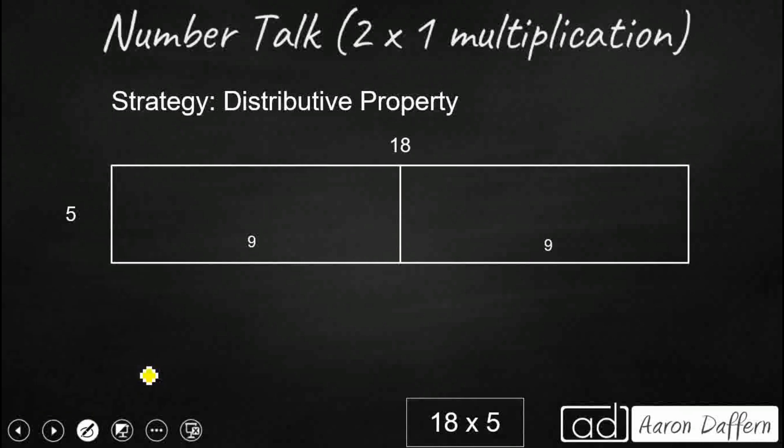So let's look first. Some of you might have used the distributive property, and you might have taken the 18, and you might have broken it up into 9 and 9. So you know that 18 times 5 is the same as 9 plus 9. You took that 18, you split it up into 9 plus 9, and then what you're going to do is you're going to multiply each of those by 5. So that's the distributive property. You can take the 9 times 5, and you can add that to another 9 times 5. And you see what we have here is we've got 45, and we've got 45, and you put those together, and you got 90. So if you did 45 and 45, you used the distributive property.